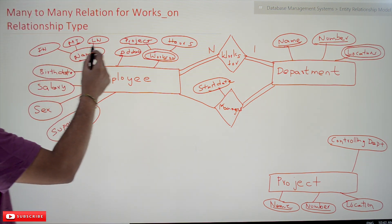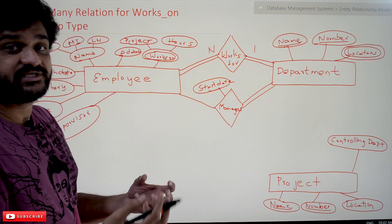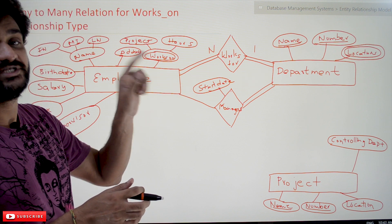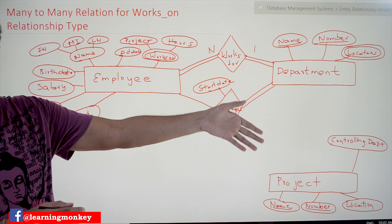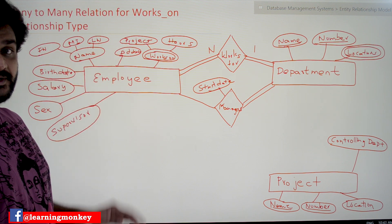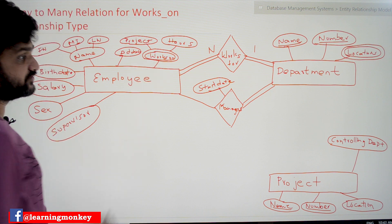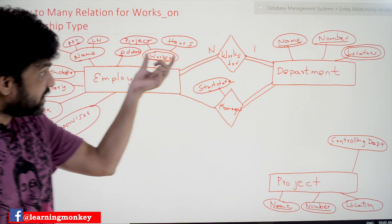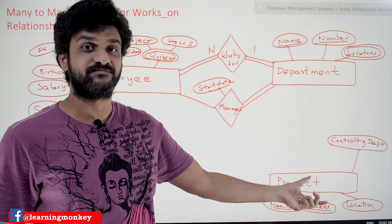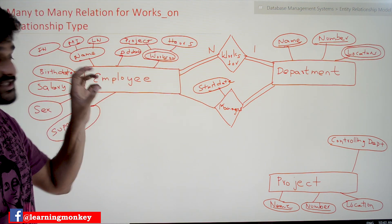Coming back to the employee entity — when can we say that there exists a relationship between two entity types? We can say so if there is an attribute representing the features of another entity type. With respect to the employee, there is an attribute 'works on' — the employee works on projects. So this 'works on' attribute is representing the concept of projects and will get converted into a relationship.